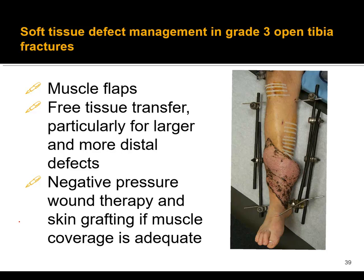We talked a lot about management of bone defects in the last set of slides — Ilizarov techniques, vascularized grafting, autogenous cancellous grafting, and some unusual techniques like using cages. We'll conclude now by talking a little bit about dead space management and soft tissue defects. I'm not going to get too much into flaps, but just a few things you should be aware of.